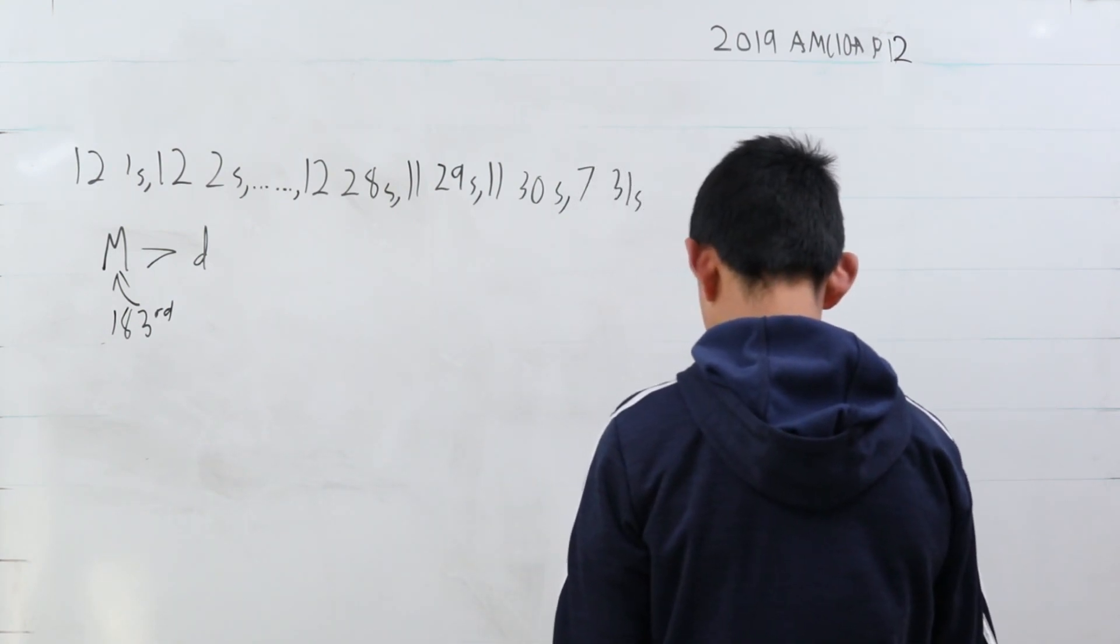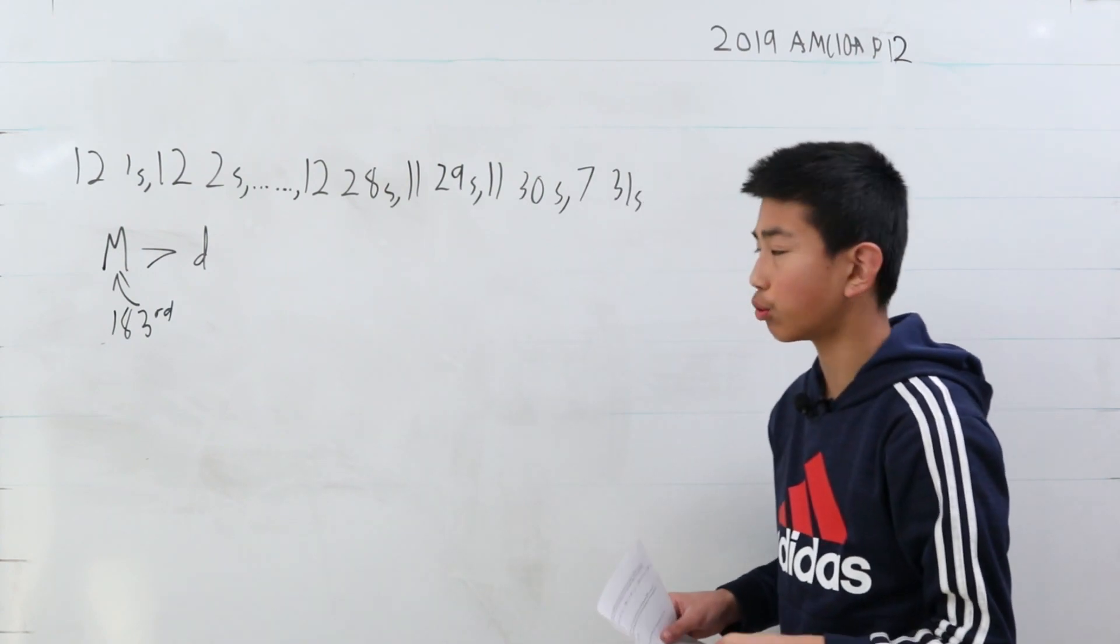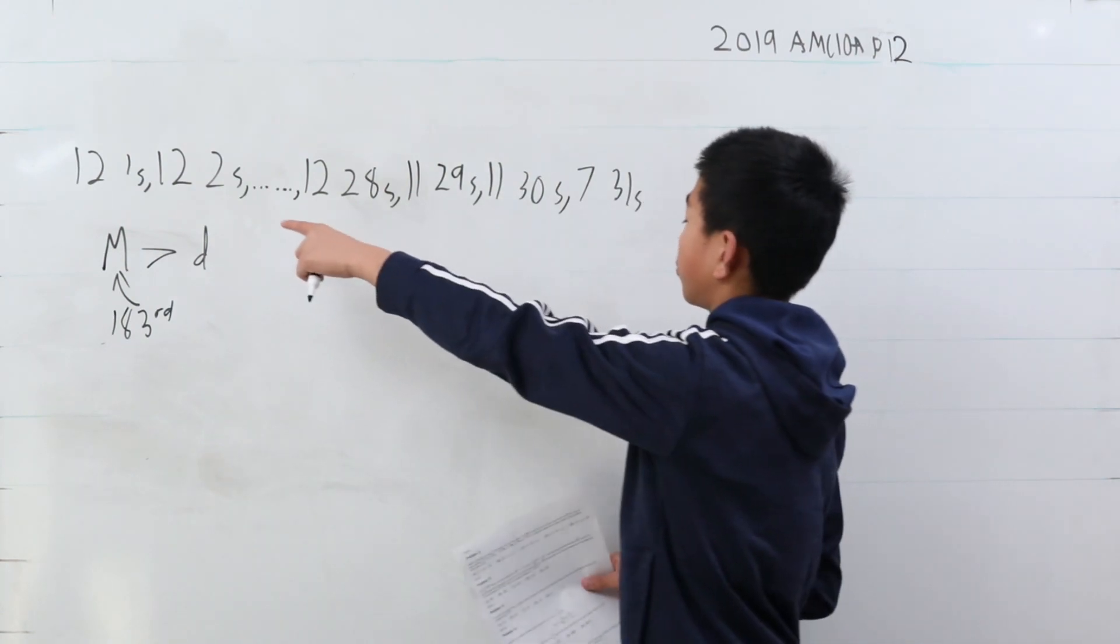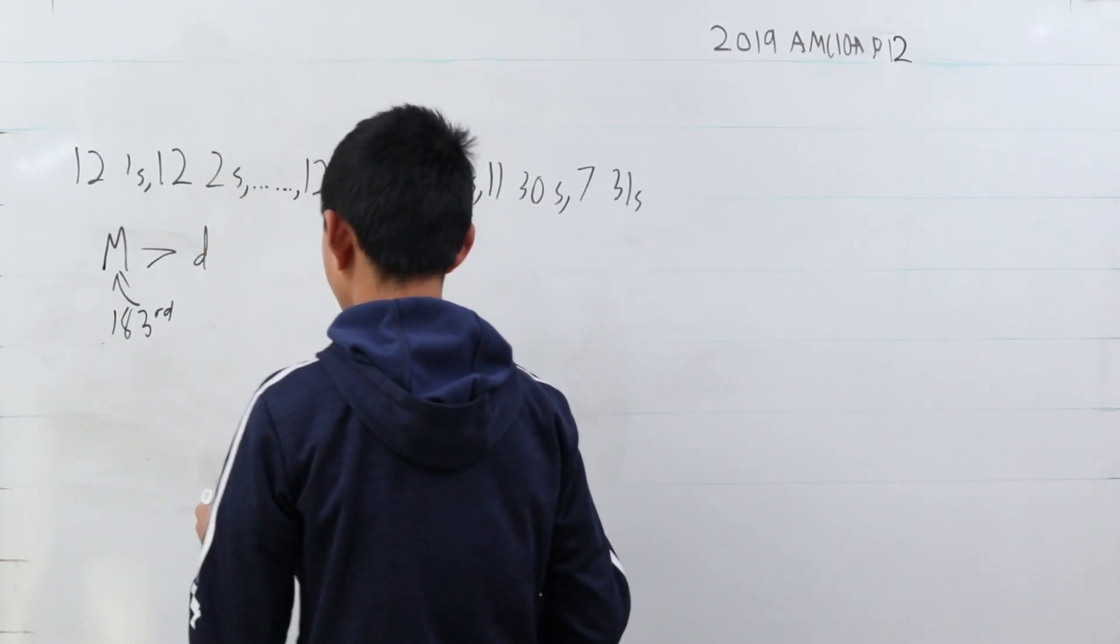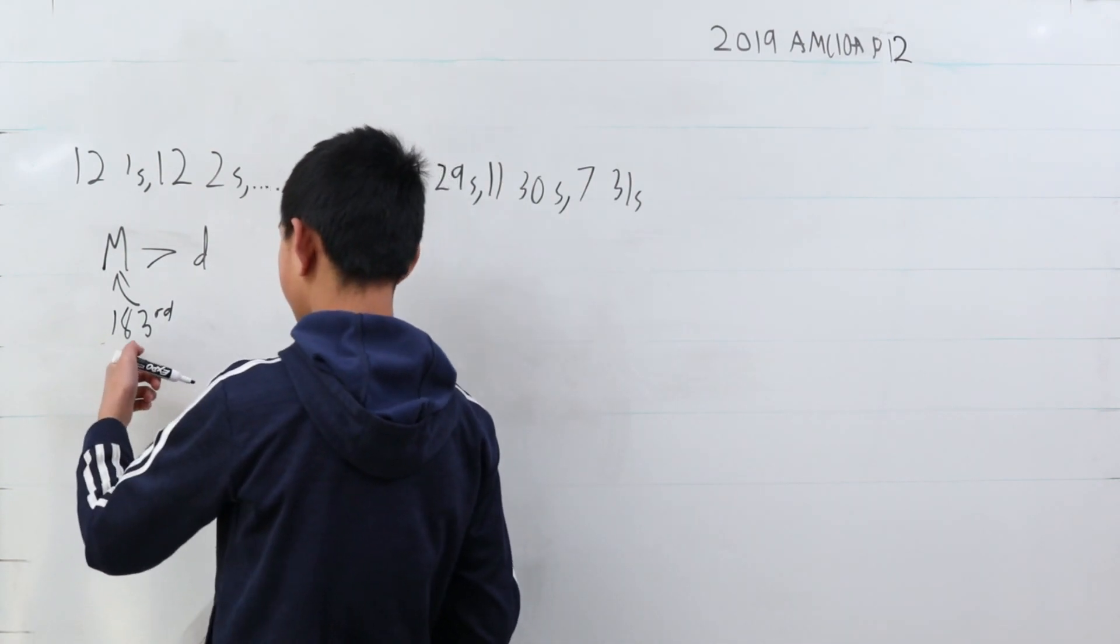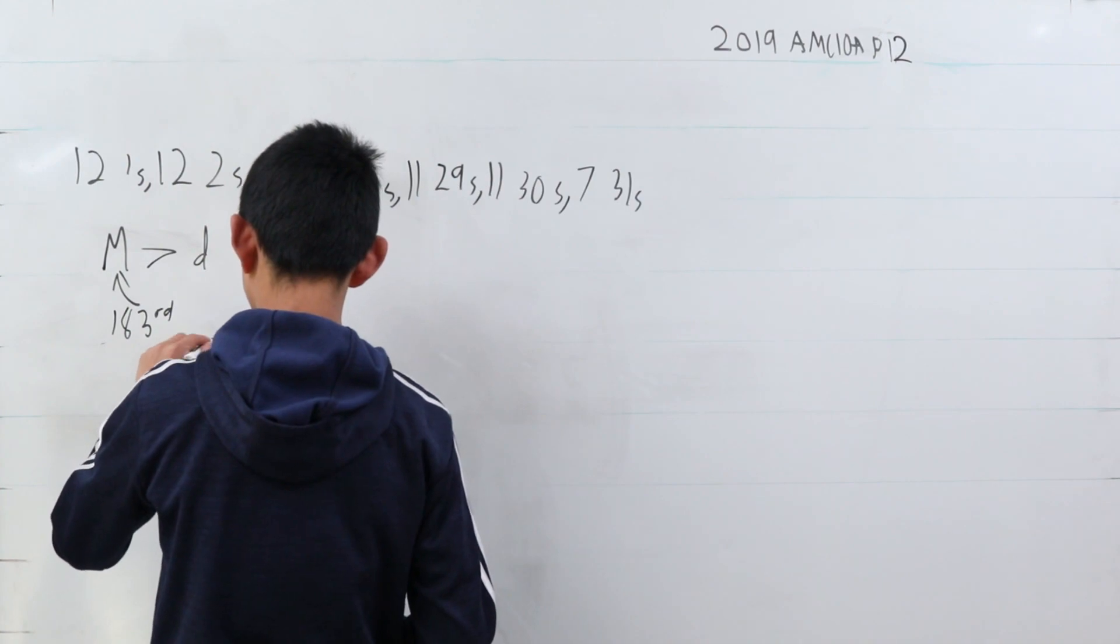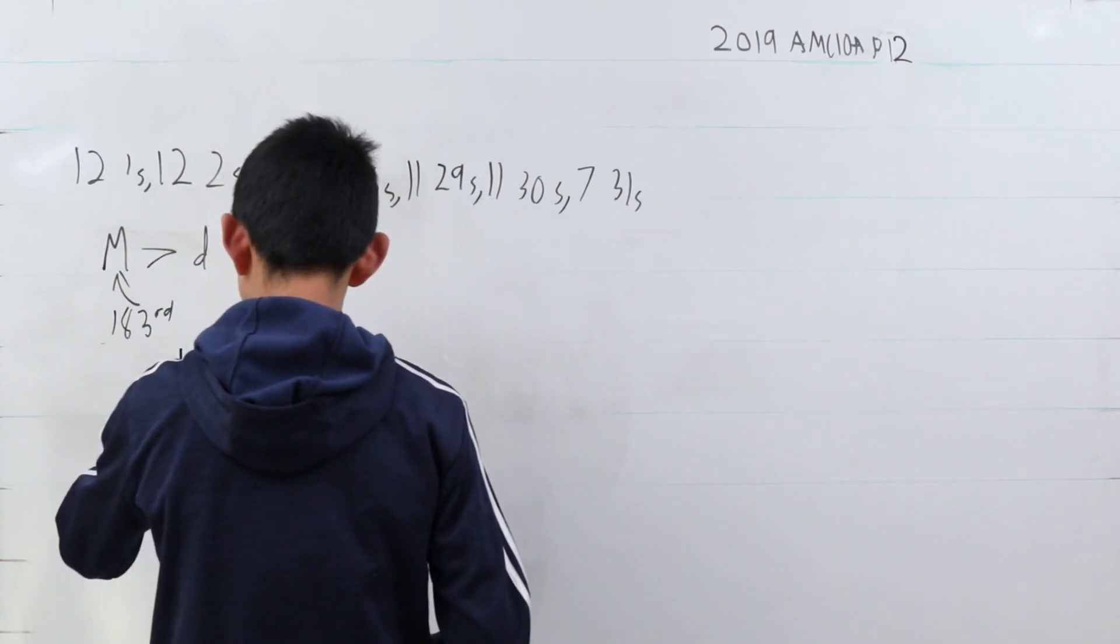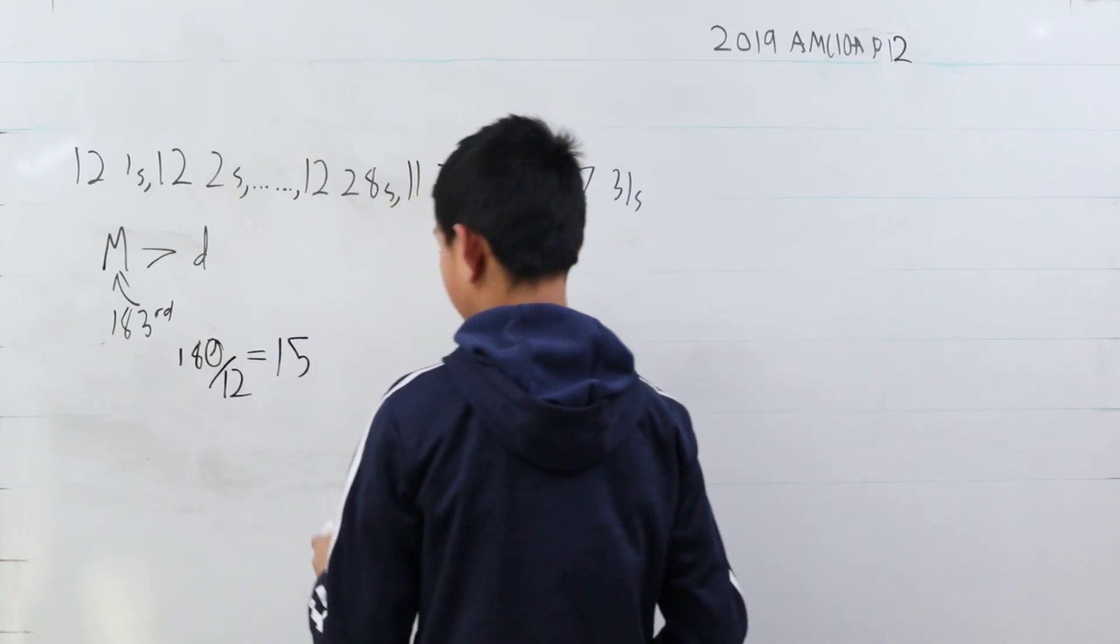We want to know which one is that. So, the closest divisor of 12, since there are 12 months here, we want to sort of closely divide 12. Well, the closest divisor of 12 here is going to be 180. 180 divided by 12 is equal to 15. Since this divides evenly,